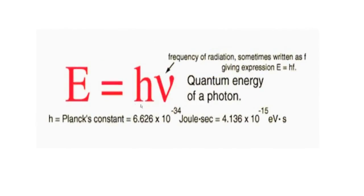E equals H-nu. E is the light energy — that is the quantum energy of a photon. Light is made up of photons, which are small packets of energy, and E is directly proportional to nu, which is the frequency of the radiation. H is the constant of proportionality, which is Planck's constant.